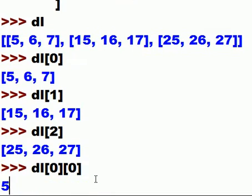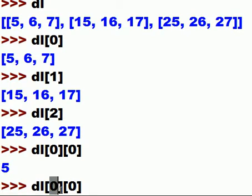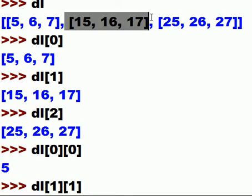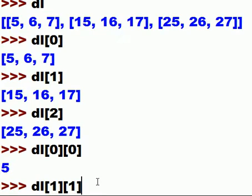Here's the 0th list, here's the 0th element — 0, 1, and 2 — so that should give us 5. And I get 5! Now let's go and do that again, but this time we're going to go to the 1st list. 0, 1 — I want this element, he's the 1st element, so that's 16. That's index 1 and 1, meaning the 1st list and the 1st element, so that should give me 16.